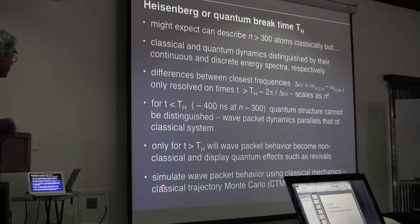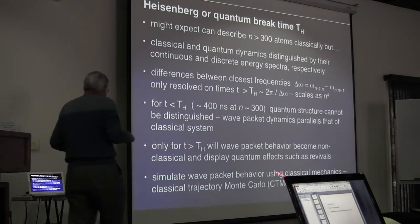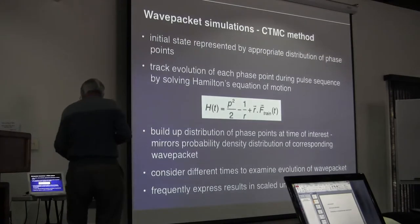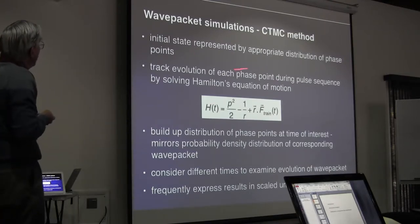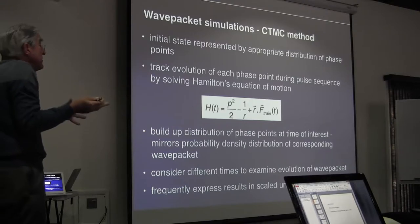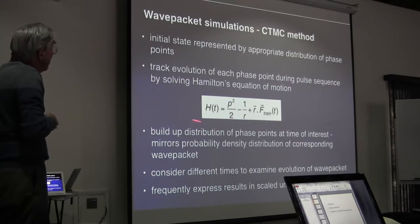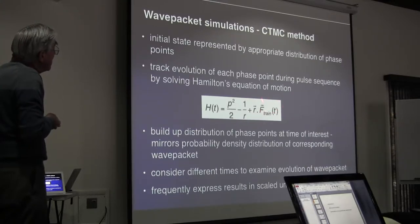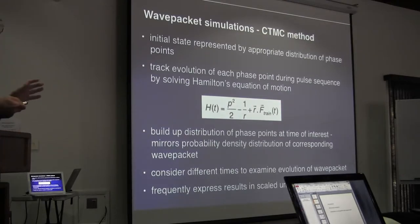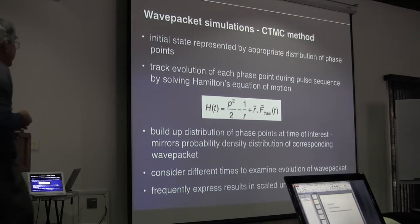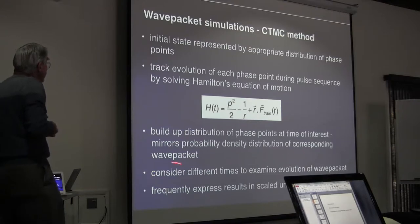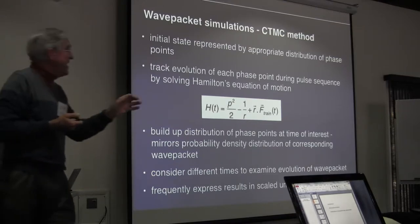In many cases we can simulate wave packet behavior using classical mechanics — conventional classical trajectory Monte Carlo calculations. You take a distribution of points in phase space that mimics the initial quantum state, track the evolution of these phase points during the pulse sequence by solving Hamilton's equations of motion, and build up the distribution of phase points at a later time of interest. That mirrors the probability density distribution of the corresponding wave packet, provided we're inside the Heisenberg time.